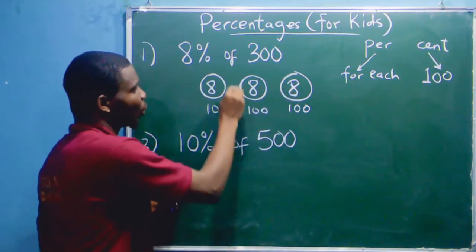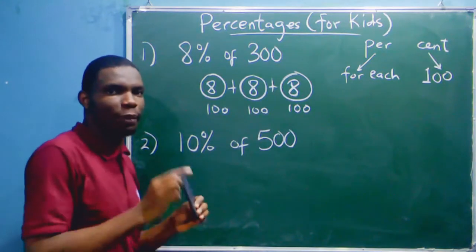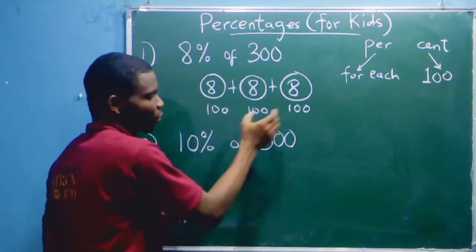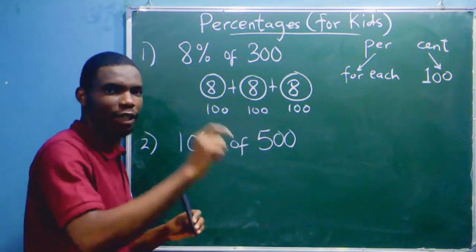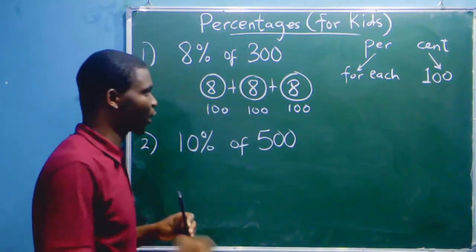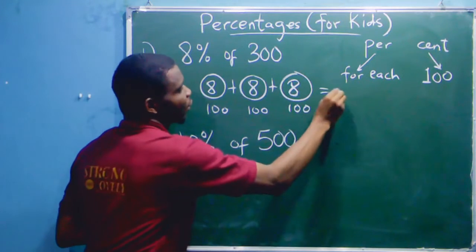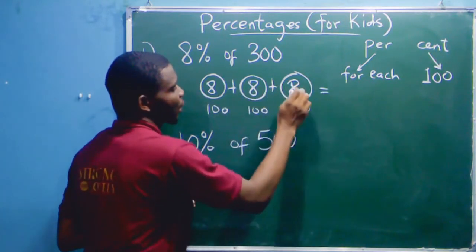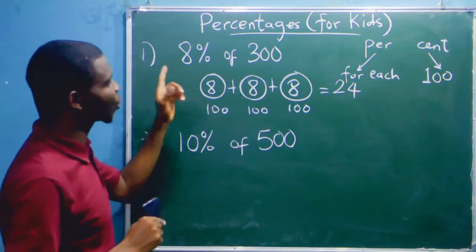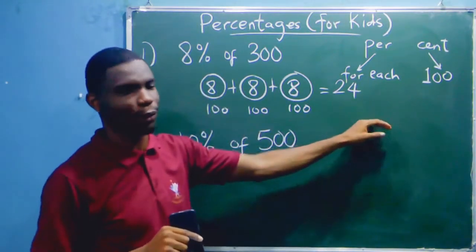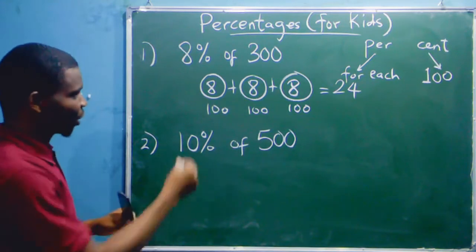What would the answer be? If you break this 300 into 100, 100, 100, and you take 8 for any hundred, what would the answer be? 8 + 8 + 8 = 24. So 8% of 300 is 24. How about this one?